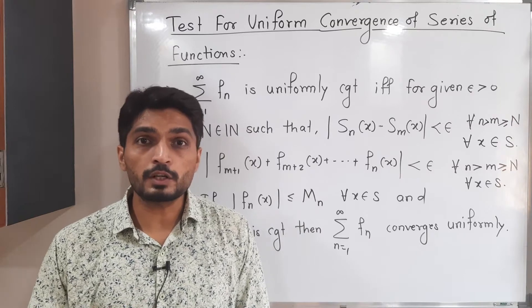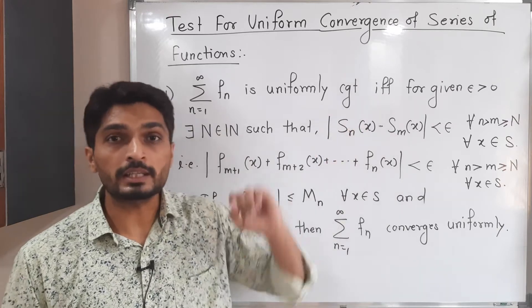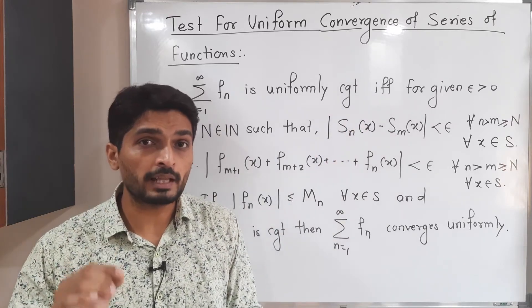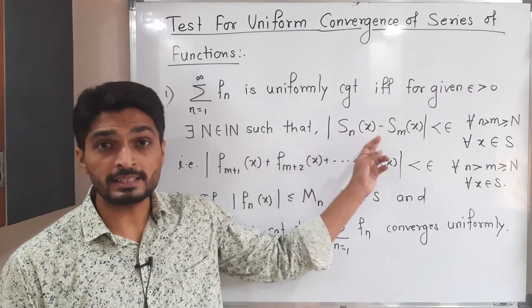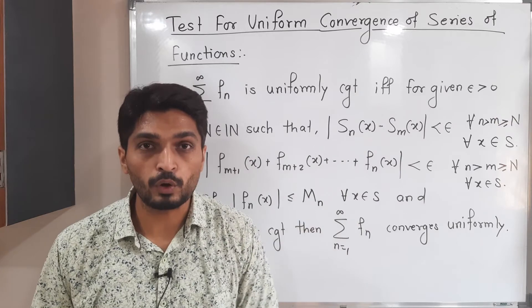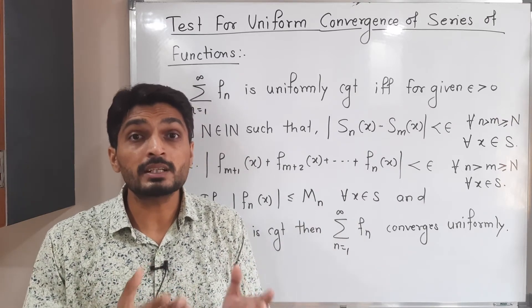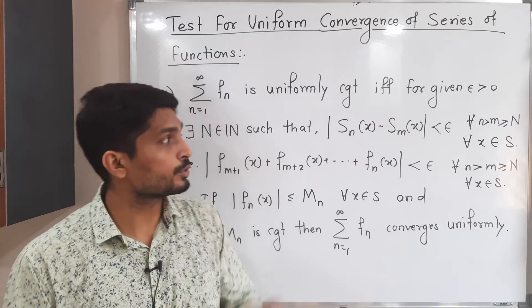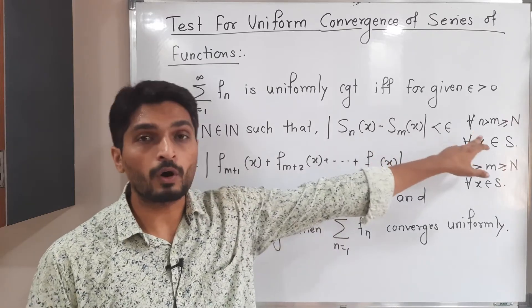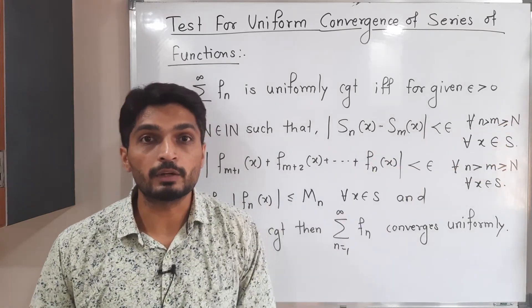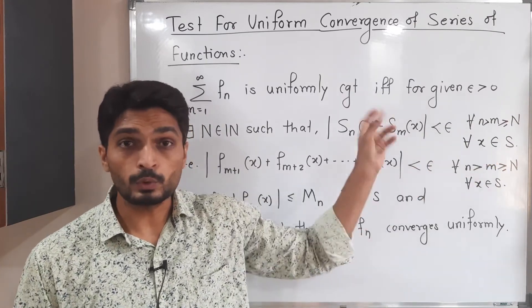The test states: the series of functions ΣFn is uniformly convergent if and only if, for a given ε > 0, there exists a capital N belonging to the set of natural numbers such that |SN − SM| < ε. This means the sequence of partial sums SN behaves like a Cauchy sequence, and this holds for all N > M ≥ capital N and for all x belonging to capital S.